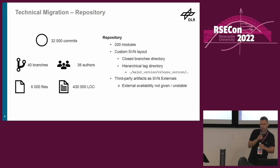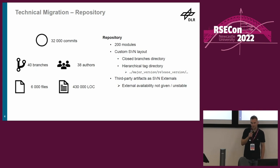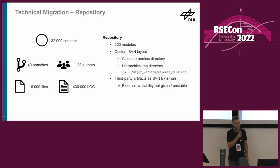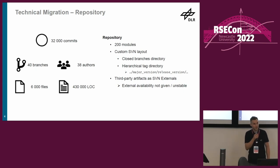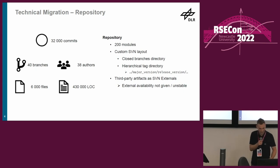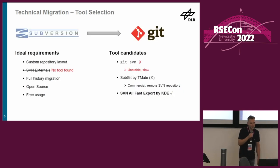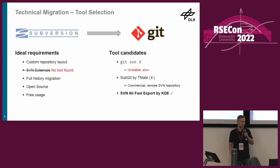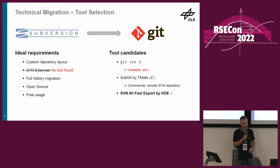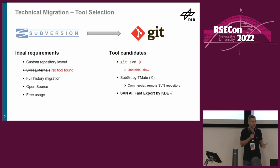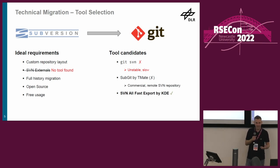When I talk about migration, I mean migrating the full history from Subversion to Git, because history is an integral part of how to work with a repository and how to understand code you've never worked with before. This is an important requirement. The tool we choose needs to handle a custom repository layout as described, and it should handle the Subversion externals migration — though I can spoil you at this point: there is no tool which can handle that.